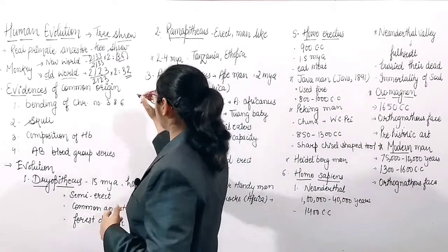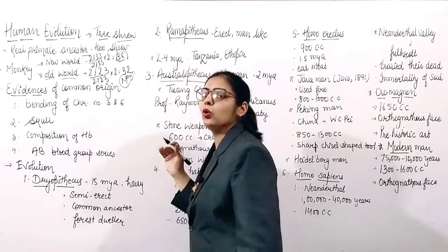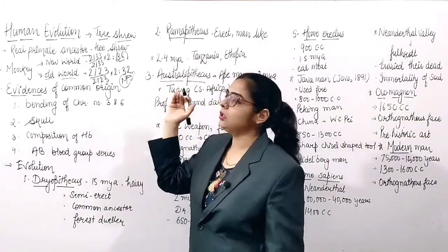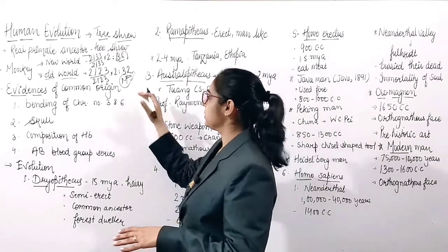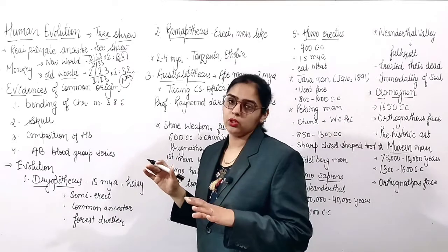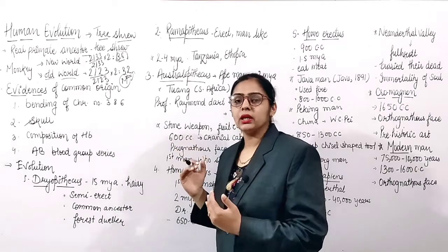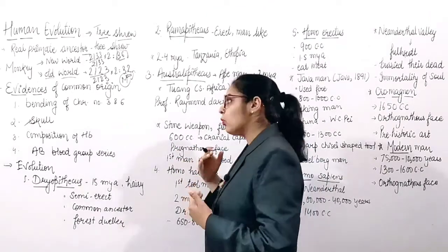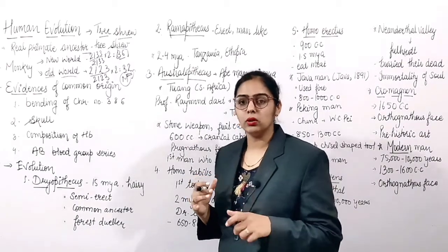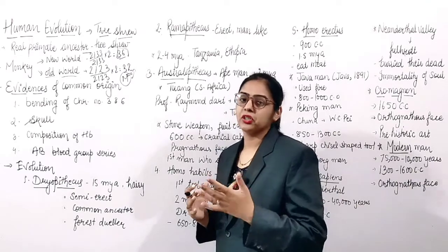The second difference: the menstrual cycle is found in females of the old world monkey, but it is absent in the new world monkey. The menstrual cycle is present in the old world monkey and absent in the new world monkey. So you can differentiate them if this question comes in an exam.